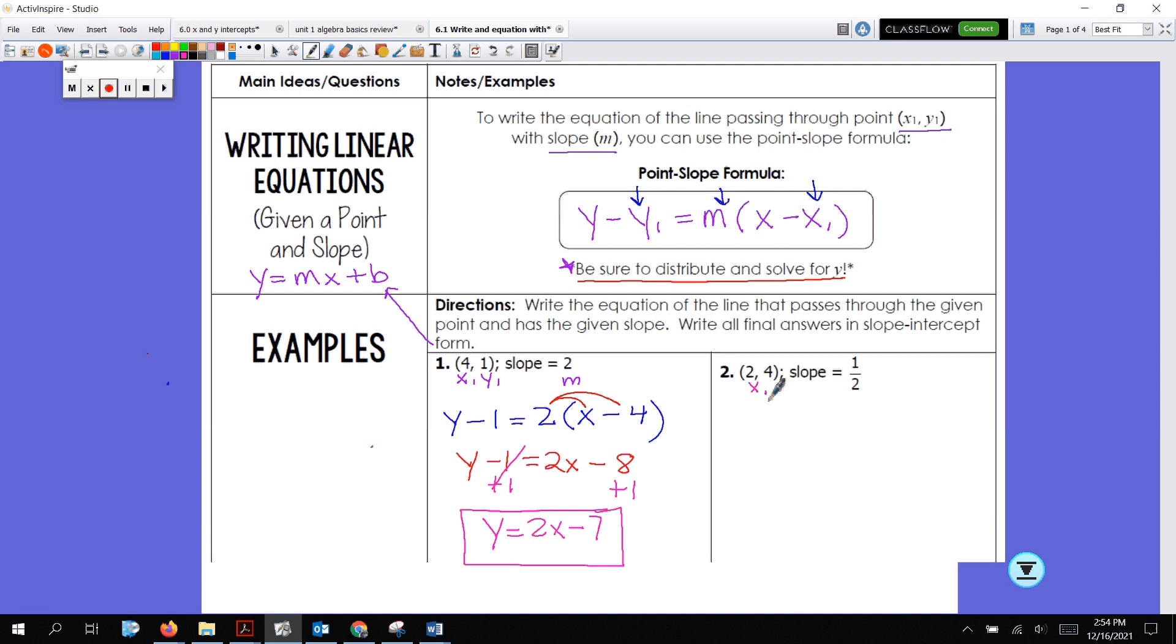Let's do the same thing for number 2. Here's my x1, y1. This is my m. And we're going to plug that into our formula. y minus y1, which is 4, equals 1 half, parentheses, x minus x1, which is 2. Now you're like, oh gosh, the slope's a fraction. I have to distribute that. Don't worry. It's okay. 1 half times x is 1 half x. 1 half of negative 2, think about it, half of negative 2 is negative 1. Write everything else down. And now we're one step away from being done here. We need to get y by itself. Right now I'm subtracting 4. So the opposite of subtraction is addition. y equals 1 half x plus 3. Beautiful.